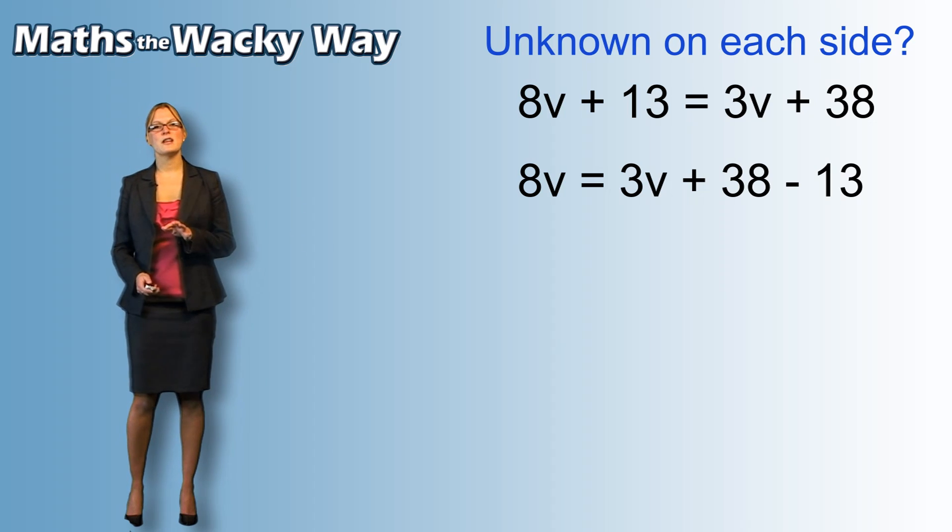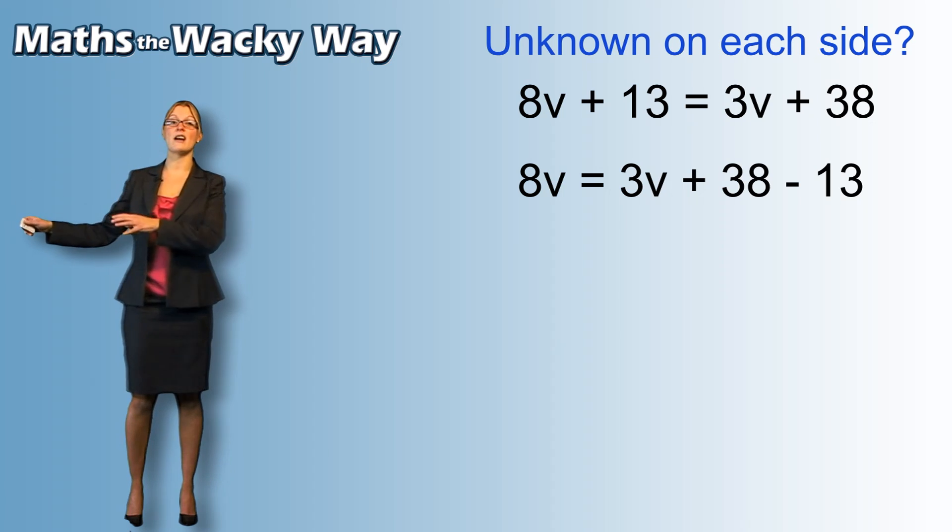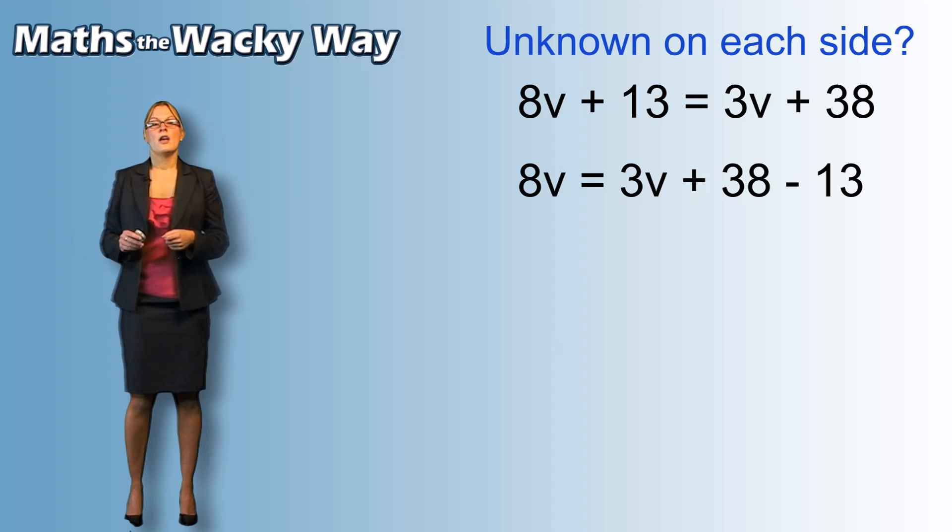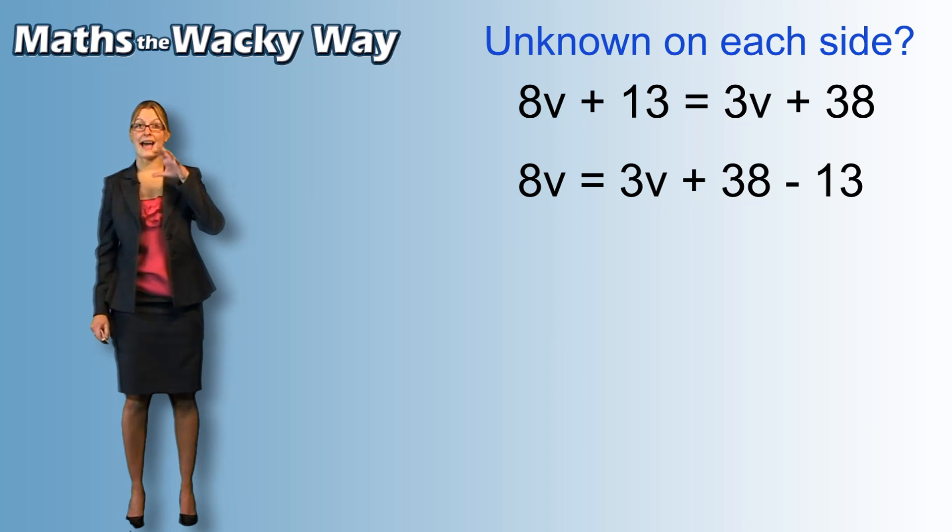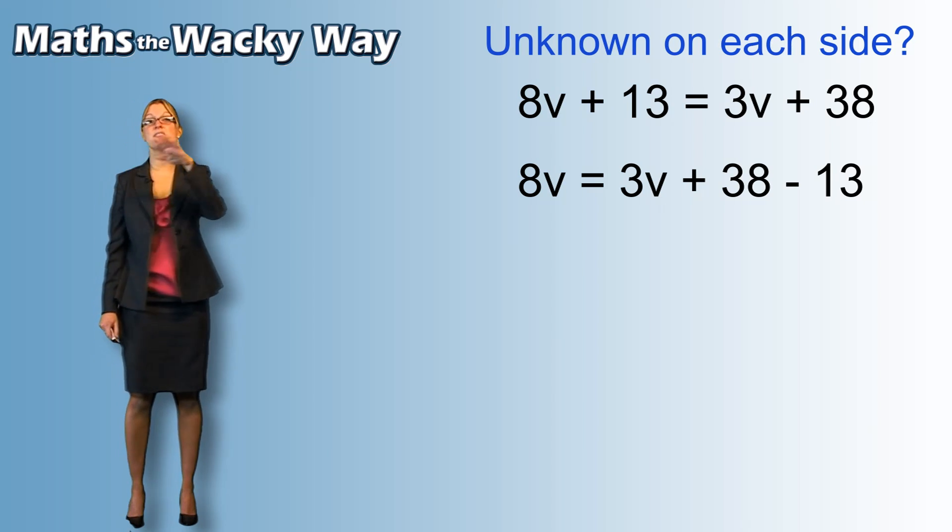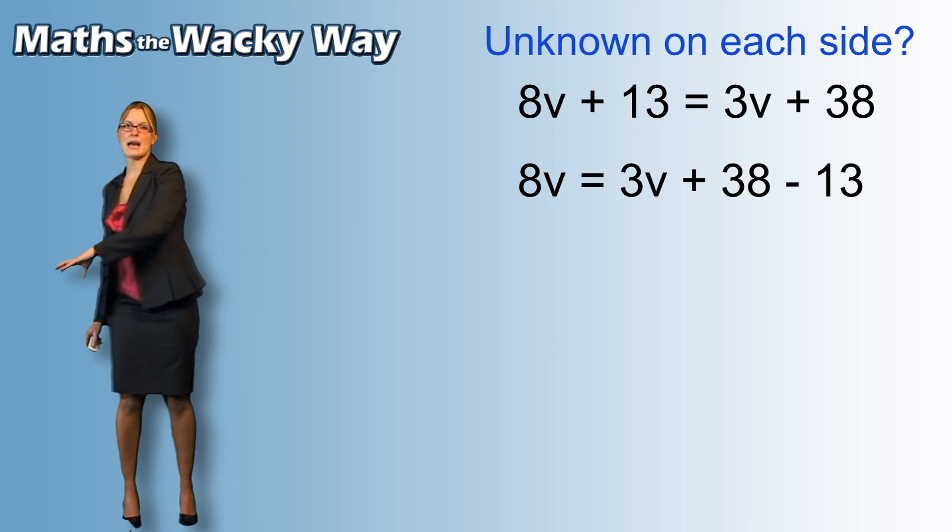So, the first thing we would need to do is move the 13 away because the 8v side is purely going to be for the unknown v's. 13 is going to cross the equal sign. He's going to get a high five. He was adding, so he's going to go to the other side and become a subtract.